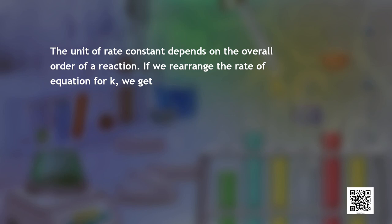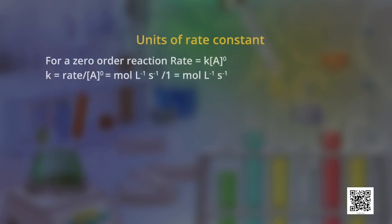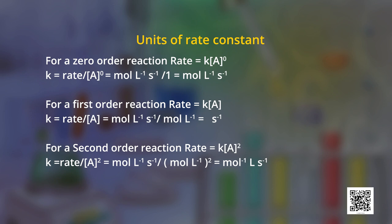The units of rate constant depend on the overall order of a reaction. Rearranging the rate equation for k, we get: k = rate / ([A]^x × [B]^y). In terms of units, k = (mol/L/s) / (mol/L)^(x+y), where x+y is the overall order. If the overall order is 0, the unit of k is mol·L⁻¹·s⁻¹. If the overall order is 1, the unit is s⁻¹. If the overall order is 2, the unit is L·mol⁻¹·s⁻¹.